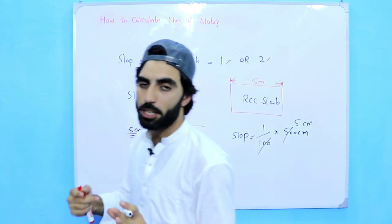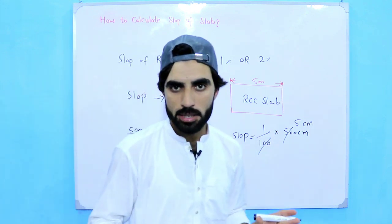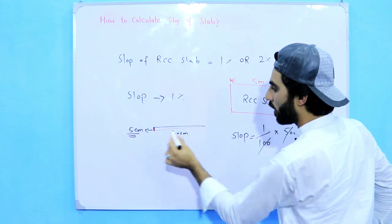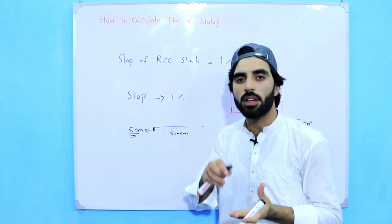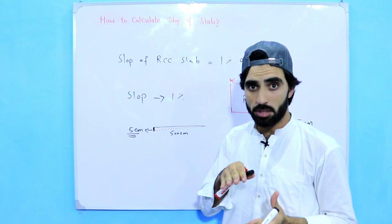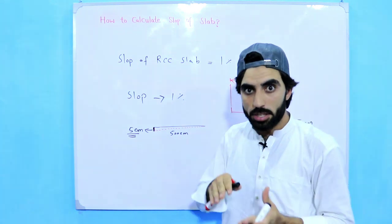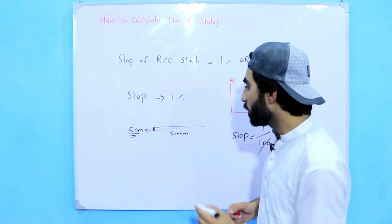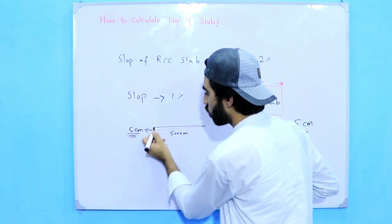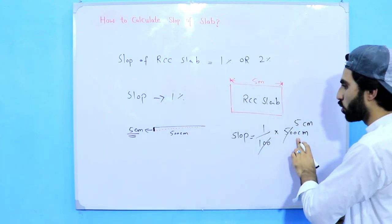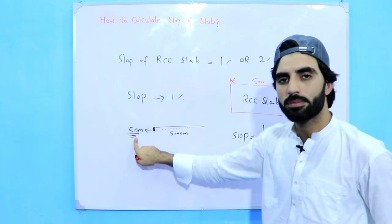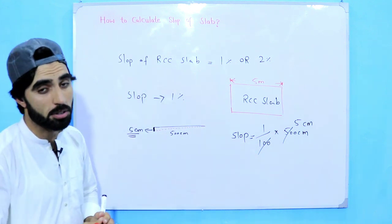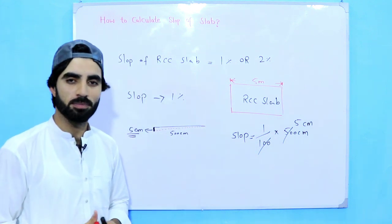This is a short video but it is very important. For example, if the depth of the RCC slab is 15 centimeters, then the slope side should be decreased accordingly using this formula. If you have any questions about this video, just comment and I will try to reply. Thanks for watching — see you in the next video. Goodbye.